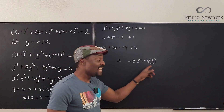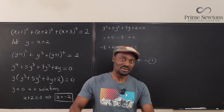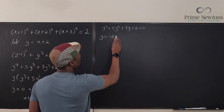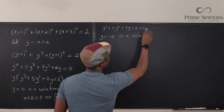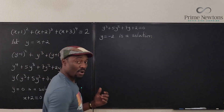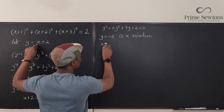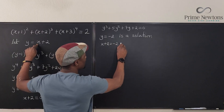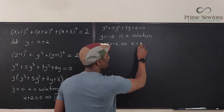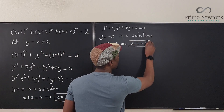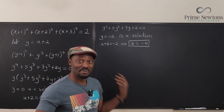So Y equals negative 2 is another solution. What does that mean? We come back and say x + 2 = −2, which implies x = −4 after subtracting 2 from both sides. There we go — we now have two solutions and need two more.